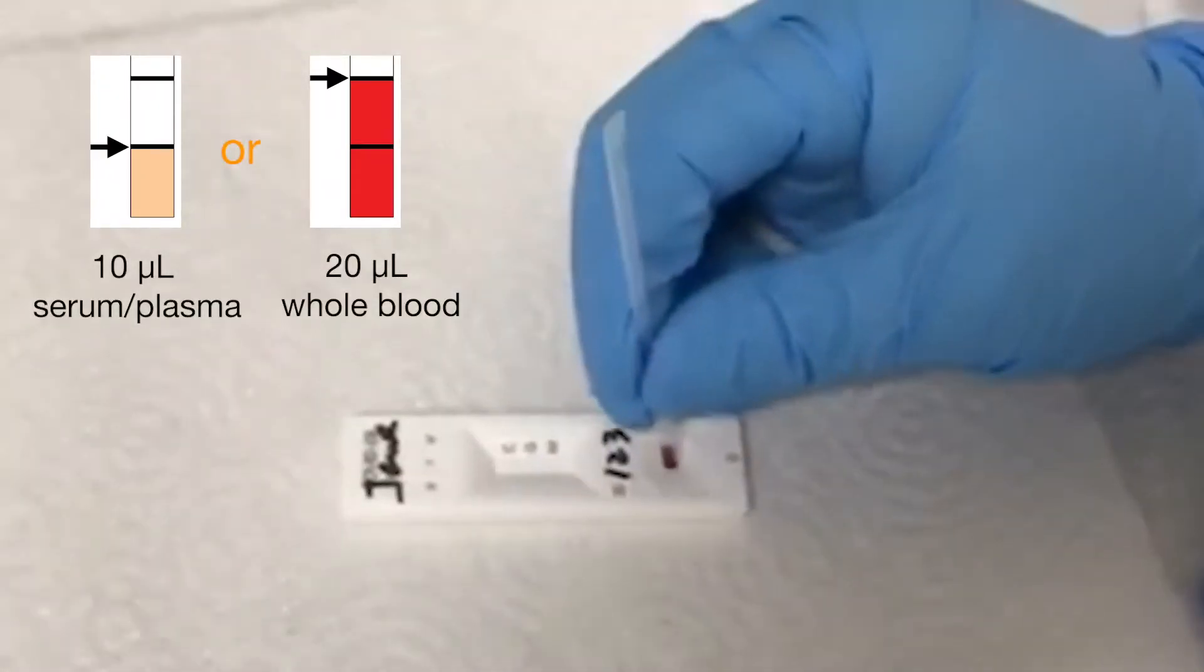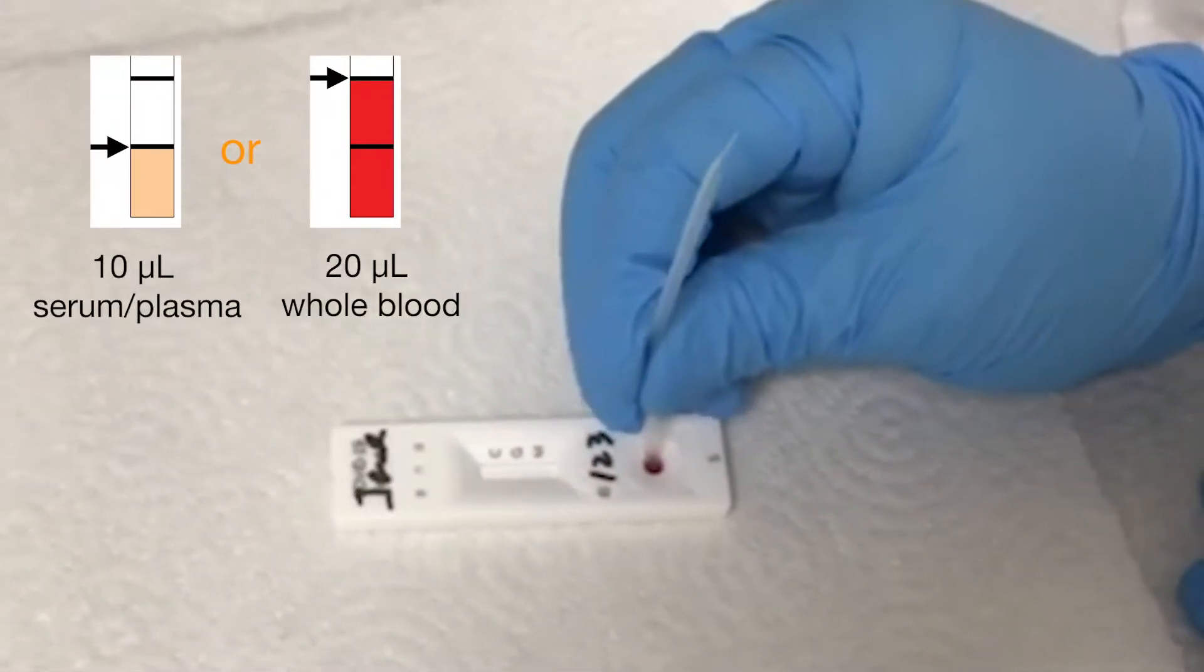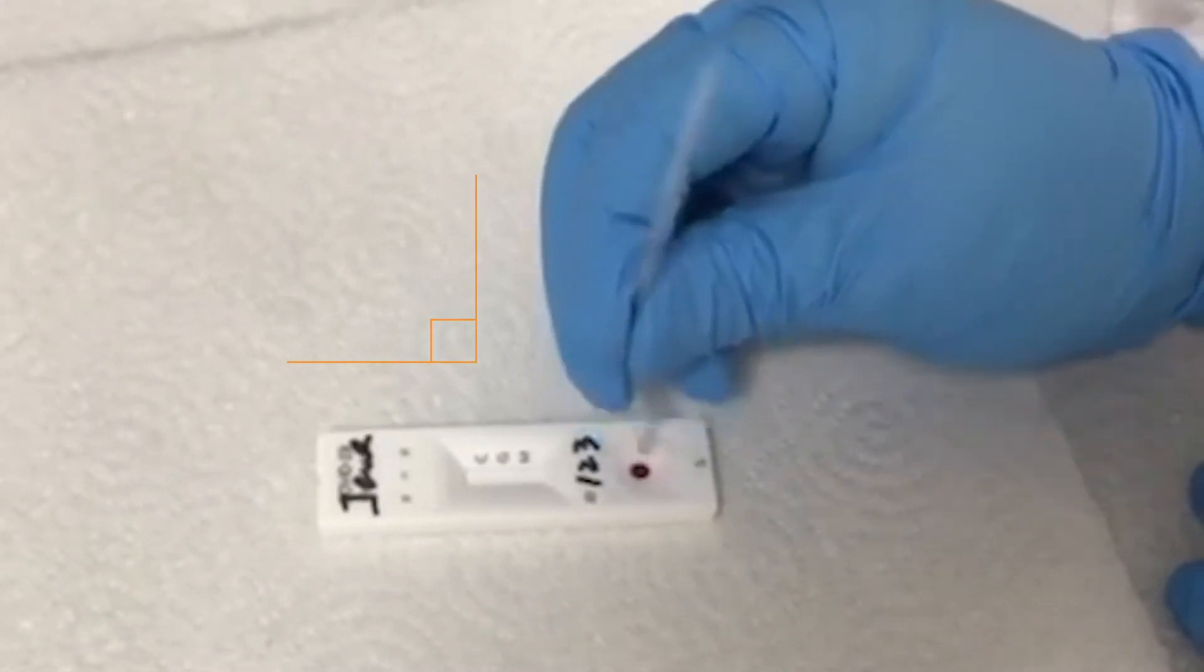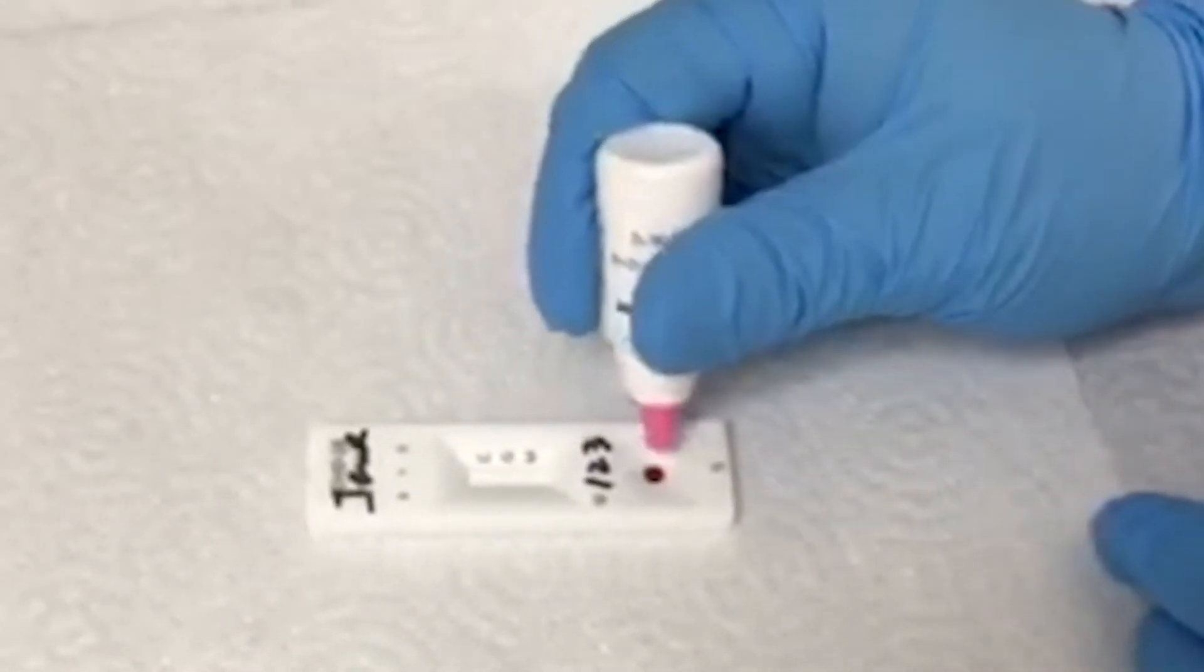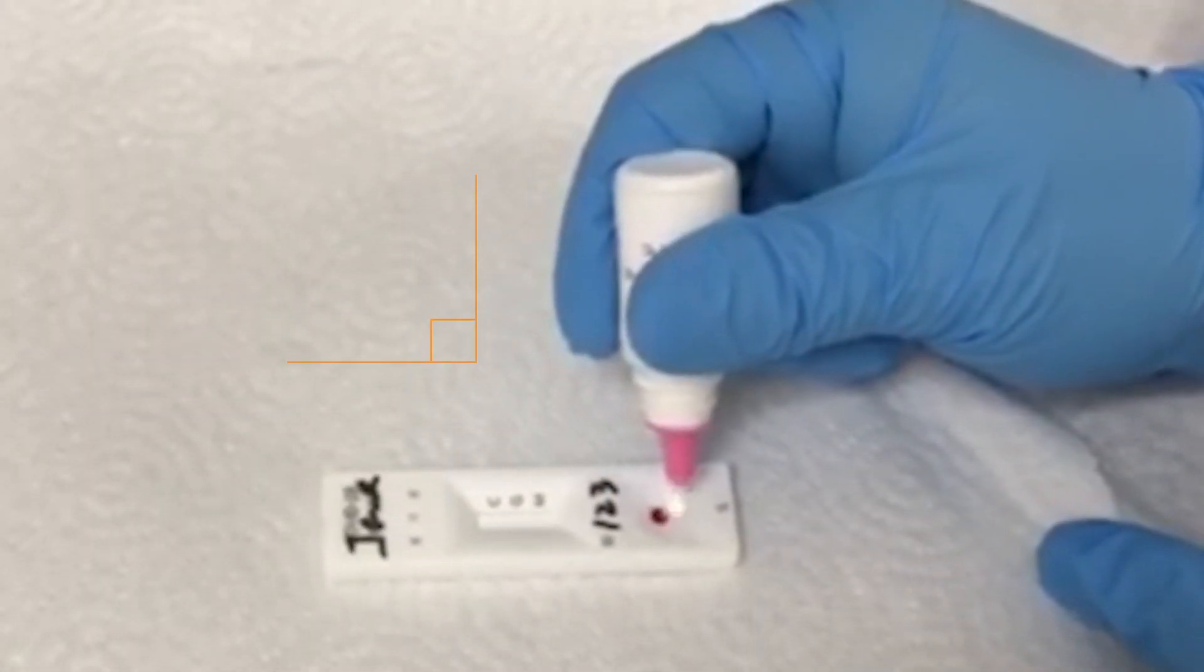Fill the capillary tube with the specimen and dispense the specimen into each sample well. Keep the capillary tube vertical. Immediately add two drops of detection buffer into the center of each sample well with the bottle positioned vertically.